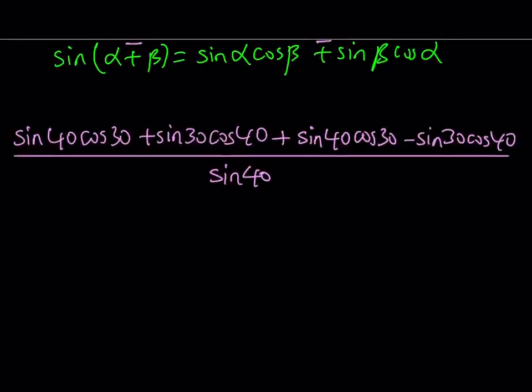Okay, let's go ahead and simplify this. Notice that sin 30 cos 40 and negative sin 30 cos 40 are opposite, so they're going to cancel out. Let's cross them out.